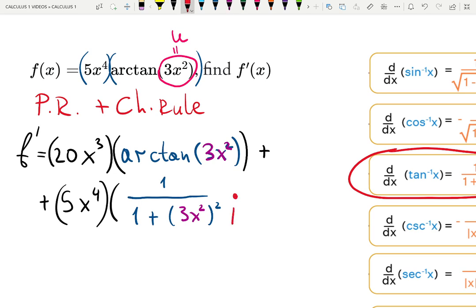Now, chain rule says don't stop, because there is a function inside of the arctangent. So chain rule says we also need to multiply by the derivative of the function inside. That gives me 6x, parentheses like so.